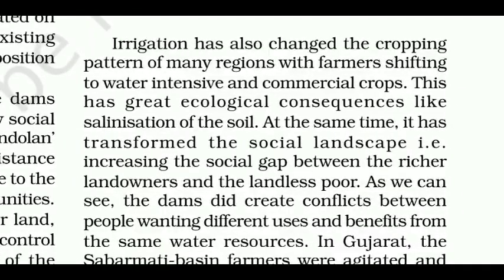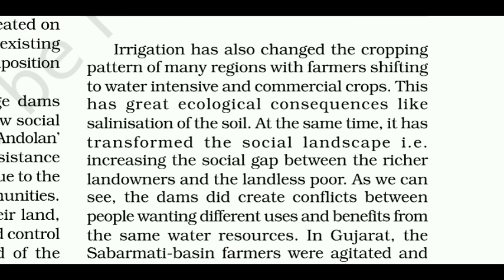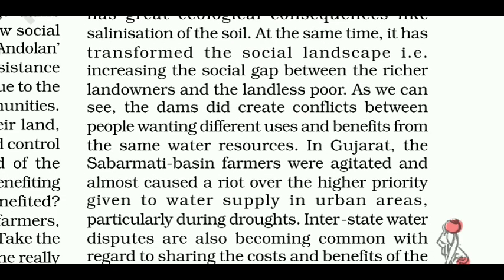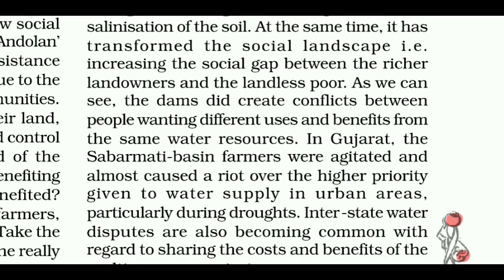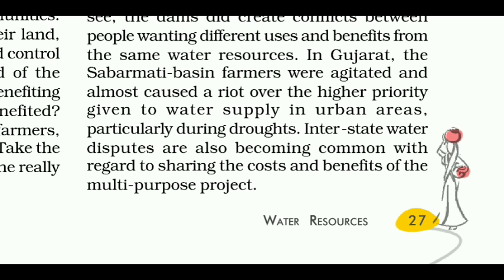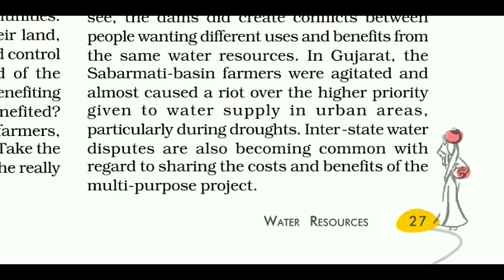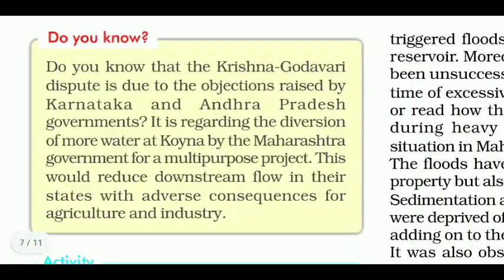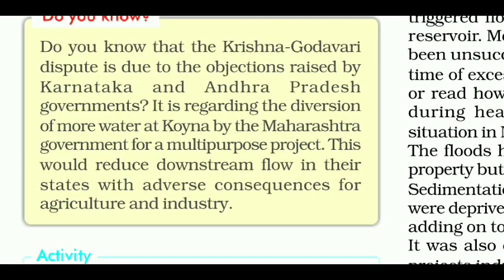Irrigation has also changed the cropping pattern of many regions, with farmers shifting to water-intensive and commercial crops, leading to ecological consequences like salinization of the soil and increasing the social gap between richer landowners and the landless poor. In Gujarat, the Sabarmati Basin farmers were agitated and almost caused a riot over the higher priority given to water supply in urban areas, particularly during droughts. Interstate water disputes are also becoming common, such as the Krishna-Godavari dispute, where Karnataka and Andhra Pradesh objected to Maharashtra's diversion of more water at Koyna for a multipurpose project, which would reduce downstream flow with adverse consequences for agriculture and industry.